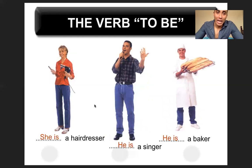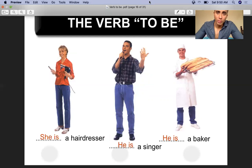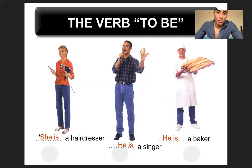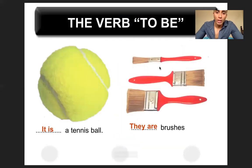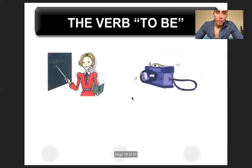Aquí tenemos más ejemplos. She is a hairdresser — ella es una peluquera. He is a singer — él es un cantante. He is a baker — él es un panadero. Miren cómo usamos el verbo to be: no es muy complicado. Tenemos sujeto, verbo to be y después el complemento. He is a postman — él es un cartero. They are doctors — ellos son doctores. It is a cat. Y para descripciones de objetos: it is a tennis ball, they are brushes.